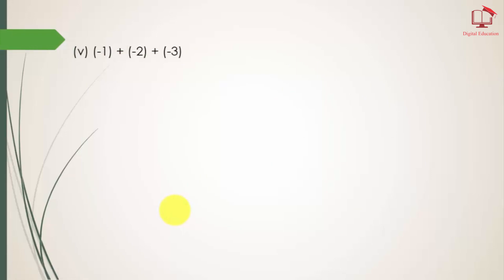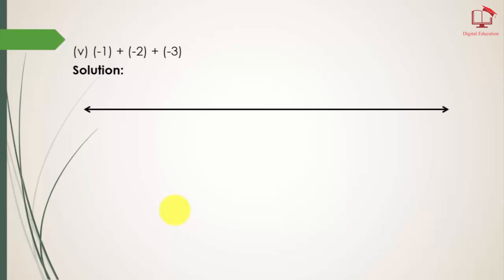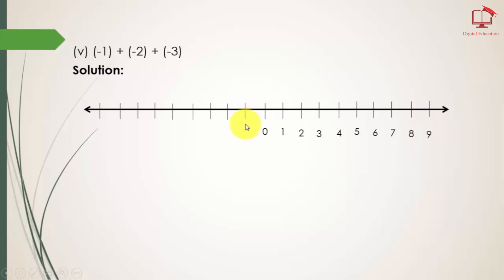Part number 5: same as before, we will draw a straight line and mark the whole line with equal distances, then assign the integers. On the right hand side we assign the positive numbers and on the left hand side the negative numbers: 1, 2, 3, 4, 5, 6, 7, 8, 9, and on the left side minus 1, minus 2, minus 3, minus 4, minus 5, minus 6, minus 7, minus 8, minus 9.